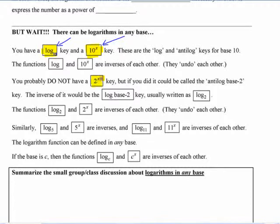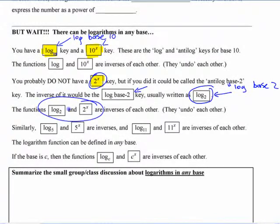If you did have a 2 to the x key, you would need a logarithm base 2. This one is logarithm base 10 up here, even though it doesn't say a 10. You need a logarithm base 2 key, and it would be written like this with a little subscript. You've used subscripts before in chemistry and stuff like that, right? It's not a power. Logarithm with a subscript of 2 means log base 2. These would be inverses of each other just the same way.